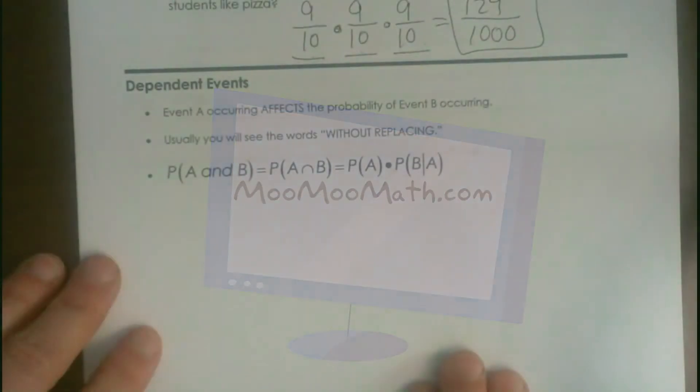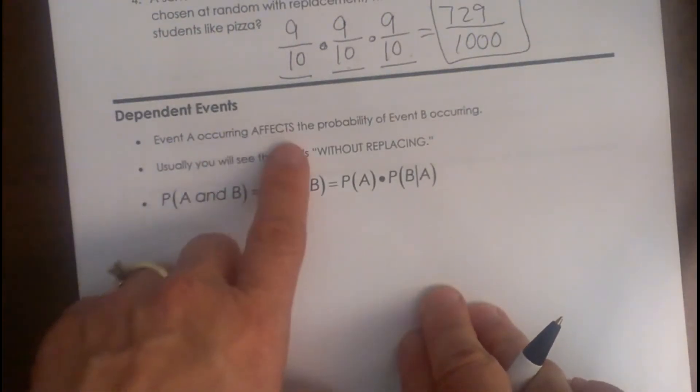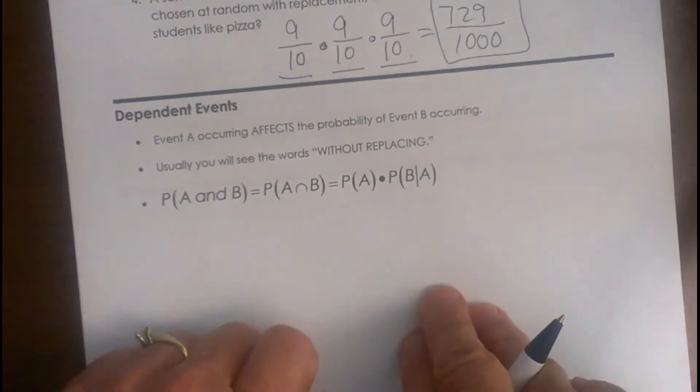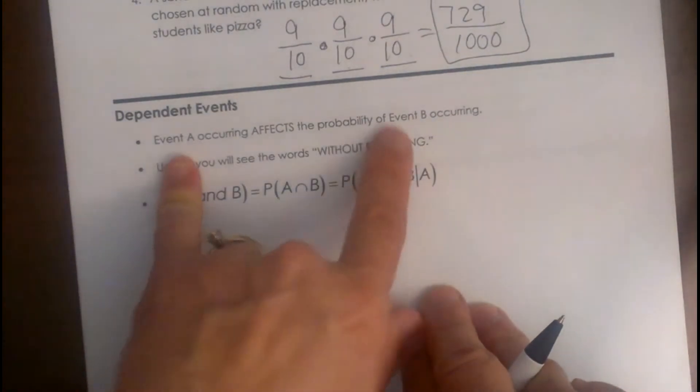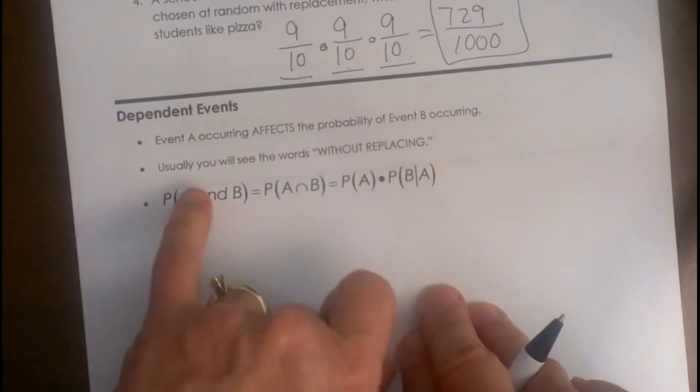A dependent event becomes a little trickier. Event A occurring affects the probability of event B. So we have two events going on and the first one affects the outcome of the second one. Usually you'll see the words like without replacement.